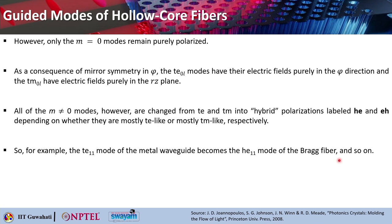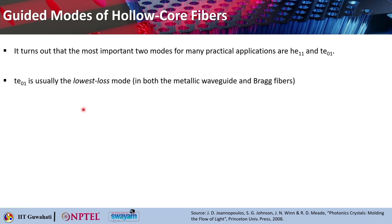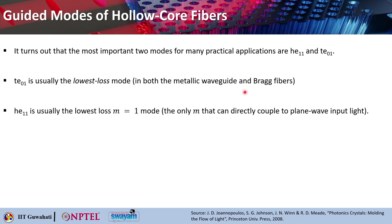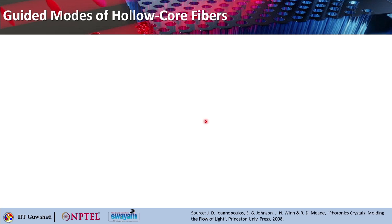HE means they are hybrid but mostly like TE, and EH means hybrid but mostly like TM. For example, the TE₁₁ mode of the metallic waveguide will become the HE₁₁ mode of the Bragg fiber. This is how, in the fiber — when you go to the hollow core fiber — the modes will be mapped. It turns out that the most important two modes for many practical applications are HE₁₁ and TE₀₁. TE₀₁ is basically the one with the lowest loss in the case of both metallic fiber and Bragg fiber, and HE₁₁ is usually the lowest loss M equals 1 mode and the only M=1 mode that can directly couple to plane wave input light.